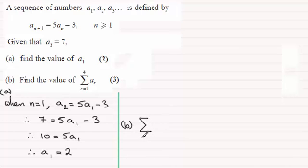So we've got the sum of r going from 1 to 4 of all of the terms ar. So this is short for saying sum up a1 when r equals 1, the first term, with the second term a2, the third term a3, and the fourth term a4. Now we know the first term, we've just worked it out, it was 2.